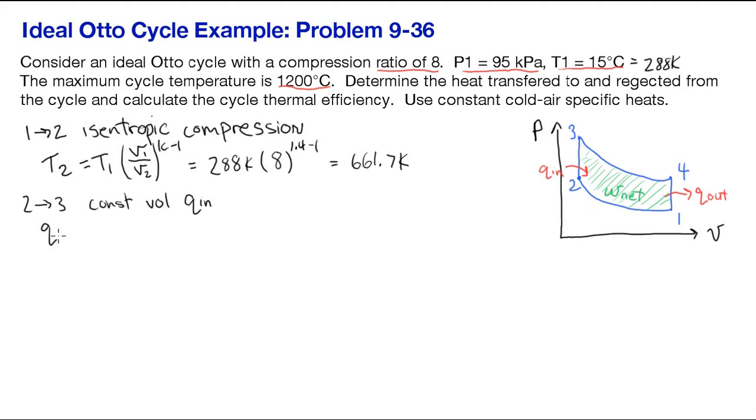From state 2 to state 3 is combustion. We treat it as a constant volume heat addition. So we use our CV multiplied by the temperature difference. We know at state 3 the temperature is 1473 Kelvin, or 1200 Celsius.